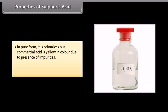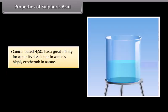Properties of sulphuric acid. In pure form it is colourless, but commercial acid is yellow in colour due to the presence of impurities. On coming in contact with the skin, it produces severe burns.